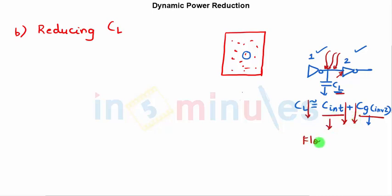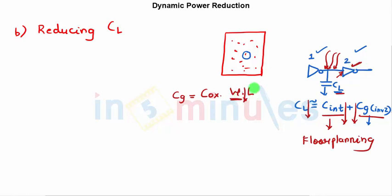Floor planning helps reduce interconnect capacitance. Gate capacitance is nothing but COX times W times L. We should not touch the length as it is determined by the process technology. Focusing on W: when W is reduced, the gate capacitance is reduced, which means the load capacitance can be reduced.